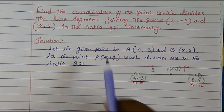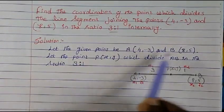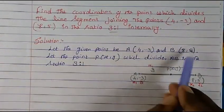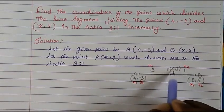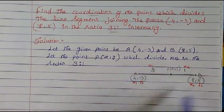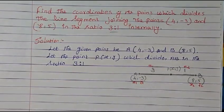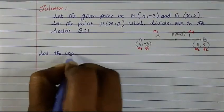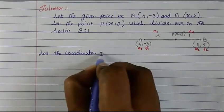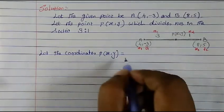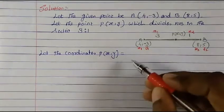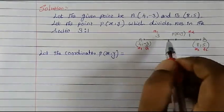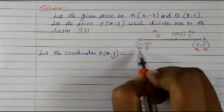Now we have to find the coordinate of point P. Whenever we need to find such a coordinate, we use the section formula. Let the given points be A and B, and let point P(x, y) divide AB in the ratio 3:1. To find the coordinates, we apply the section formula: it involves cross-multiplying m1 with x2, m2 with x1, and similarly for the y values.